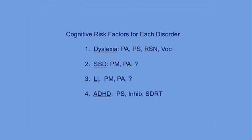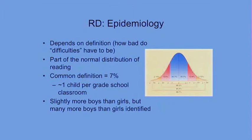Like many behaviorally defined disorders, dyslexia is not really a category — reading is continuously distributed. Like obesity or hypertension, there's a continuous distribution and we somewhat arbitrarily set a cutoff. A commonly used cutoff puts prevalence around 7%. There are slightly more boys than girls, though in clinical samples the sex ratio was much more highly skewed to boys — meaning there are many girls with dyslexia who have never been identified and never received services.